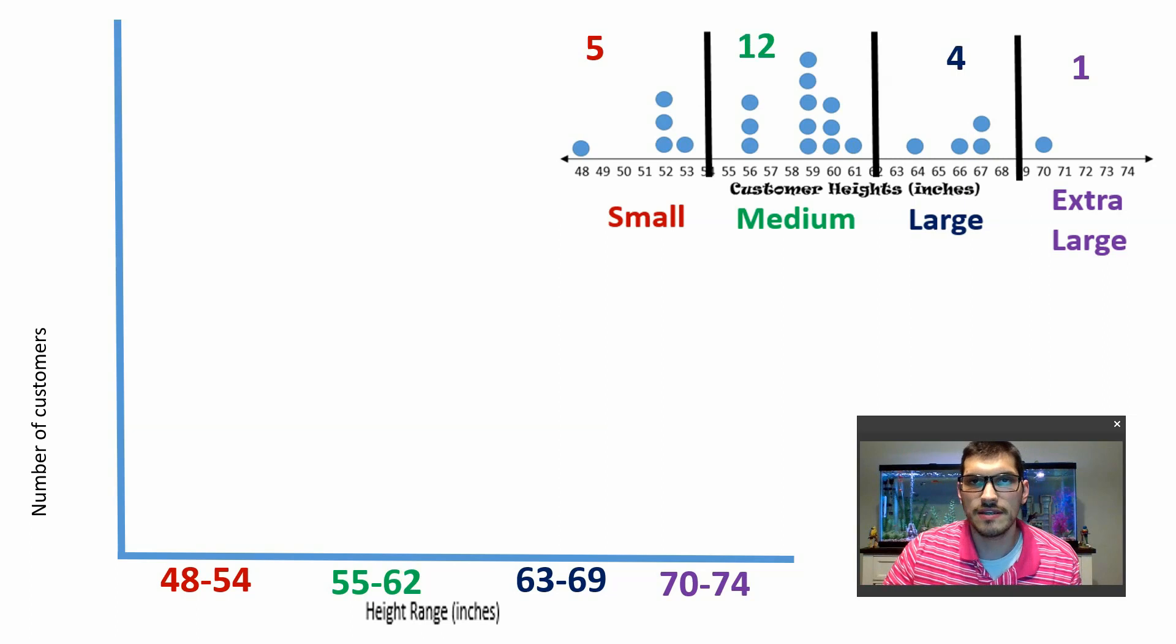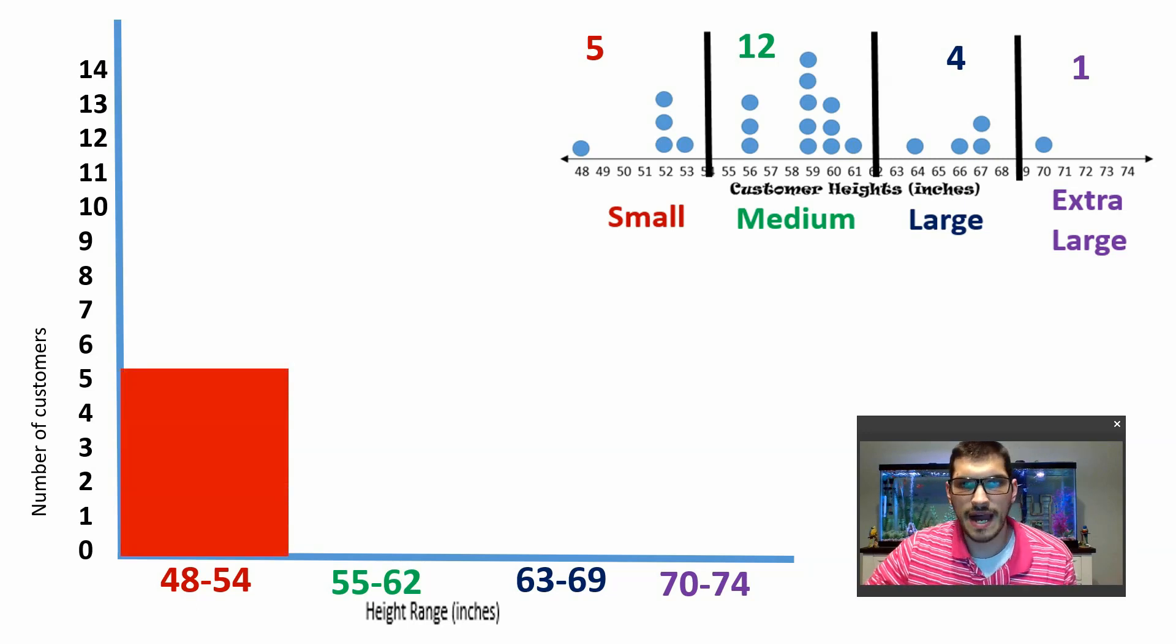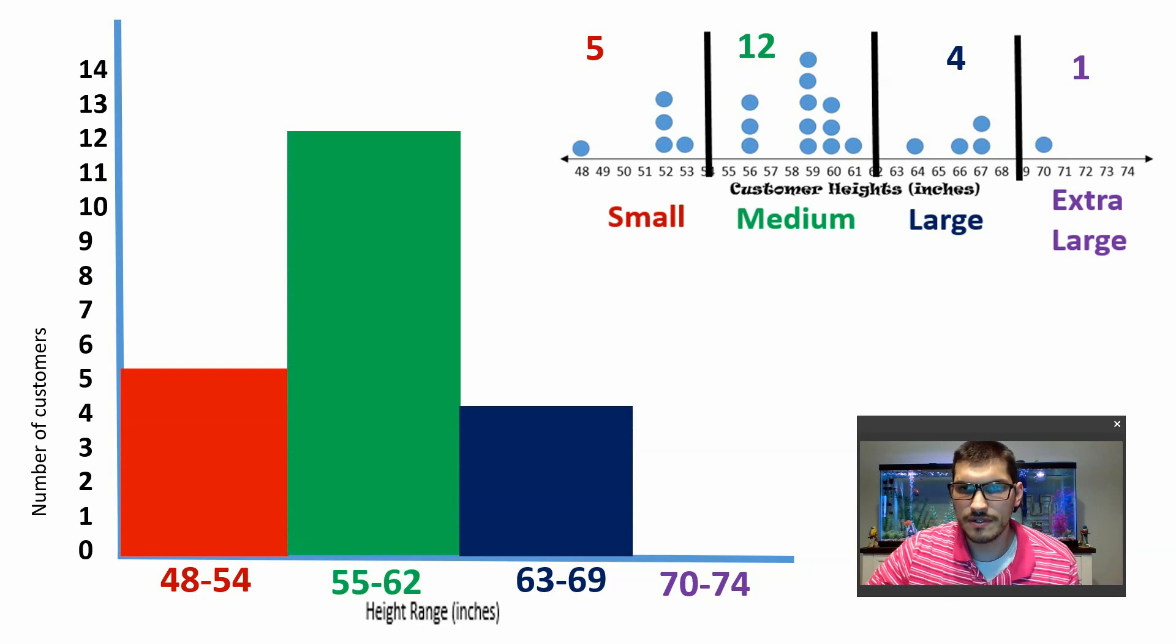So we're going to take this information and we're going to use it for our histogram. With our histogram, we've created different ranges. And now we have how many customers we have for each range. So if we were making shirts, we say, well, how many shirts do I need? Well, I would need five shirts. So I would fill in from zero to five because that's all I need for my smalls. Then we have our mediums, we would have 12 mediums, and then four larges and our one extra large.